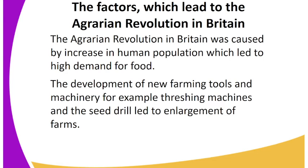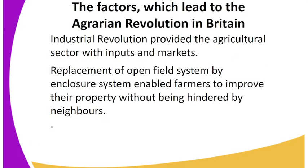The Agrarian Revolution in Britain was caused by the increase in human population, which led to high demand for food. The development of new farming tools and machinery — for example, threshing machines and seed drills — led to the enlargement of farms. The Industrial Revolution provided the agricultural sector with inputs and markets.